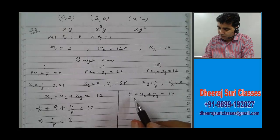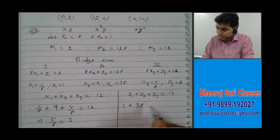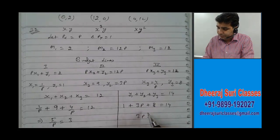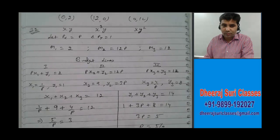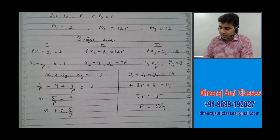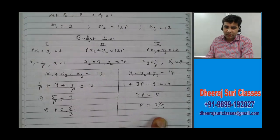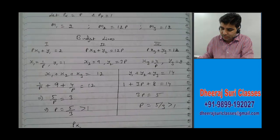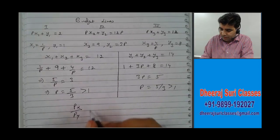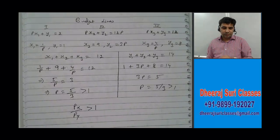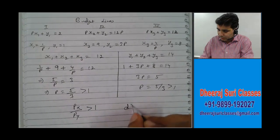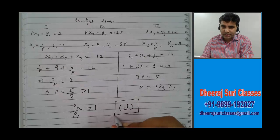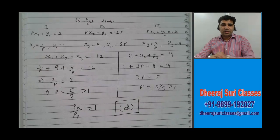And for good 2, y1 plus y2 plus y3 has to equal 14. y1 is 1, y2 is 3P, y3 is 8 — equals 14. So 3P equals 14 minus 9 equals 5, meaning P equals 5/3 again. In both cases P is 5/3, which is greater than 1. So Px by Py is greater than 1, which is option D. Option D is the correct answer. I hope you have understood these questions.